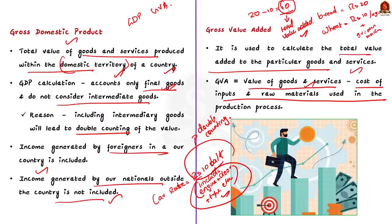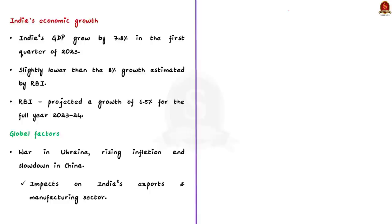India's GDP grew at 7.8 percent in the first quarter of 2023, which is slightly lower than the 8 percent growth estimated by the Reserve Bank of India. The RBI has projected a growth of 6.5 percent for the full year 2023–24. The months ahead could be challenging due to global factors and domestic pressures.